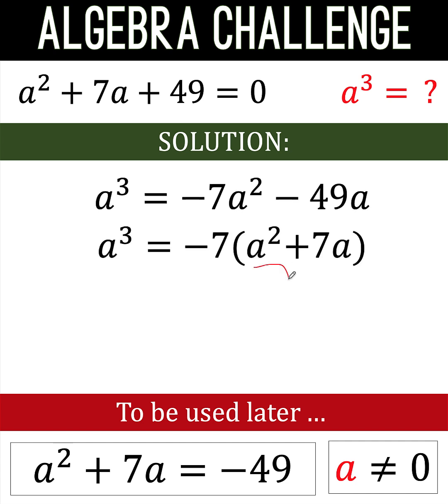Now look at this value a squared plus 7a, and you have here also a squared plus 7a, which is equal to negative 49. That means we can replace this part here by negative 49, and this is what we have. We copy the negative 7, we replace a squared plus 7a by negative 49 because that is the value of a squared plus 7a that we arrived at a while ago.